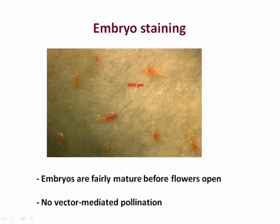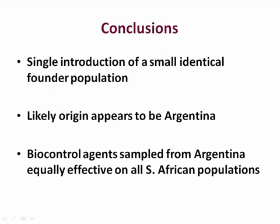Although this study has not yet confirmed apomixis, one thing for sure is that the ovules are fairly mature before the flowers open, and we can conclude that there is no vector-mediated pollination occurring. From these results we can tentatively conclude that the Pong Pong weed in South Africa was a single introduction of a small, genetically identical founder population that is expanding through apomictic seed production, and that the likely origin of Pong Pong weed in South Africa is Argentina rather than Brazil — specifically from one province in Argentina that is polyploid where previous work confirmed a tetraploid apomictic population. Therefore we suspect that biocontrol agent samples from Argentina would be equally effective on all South African populations.